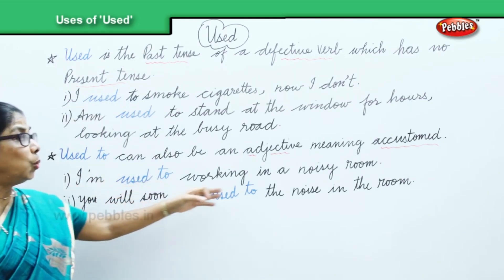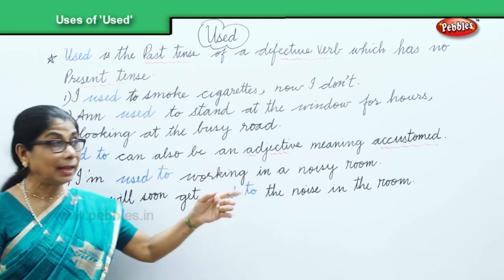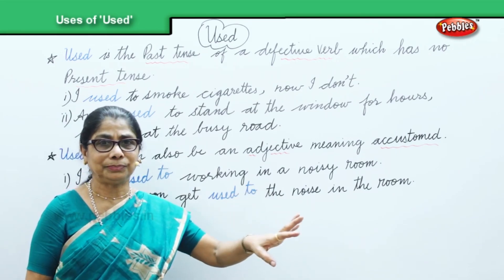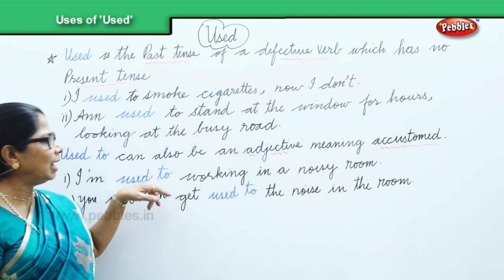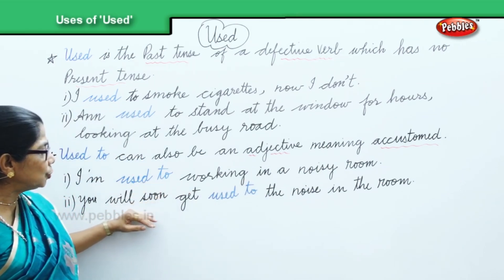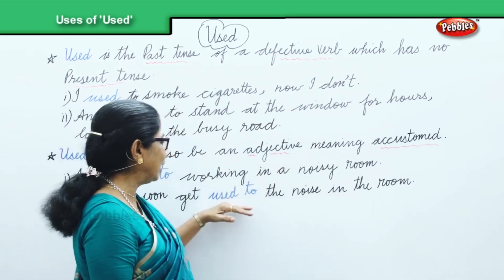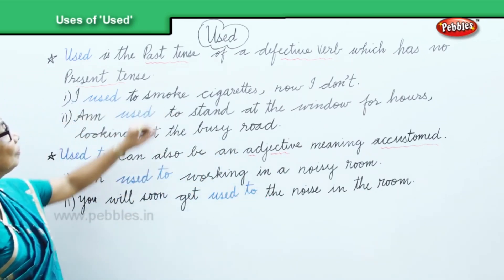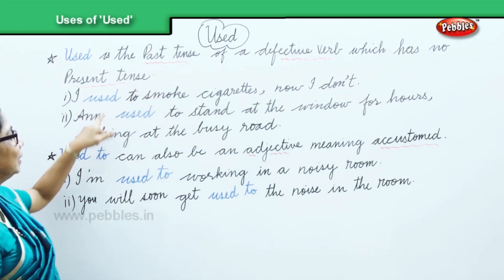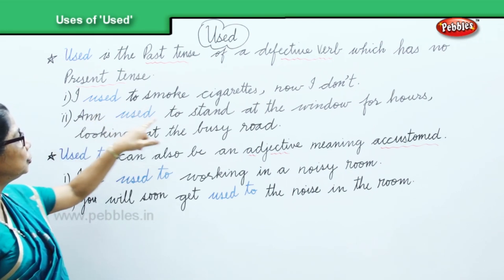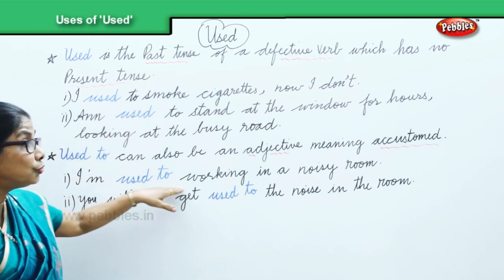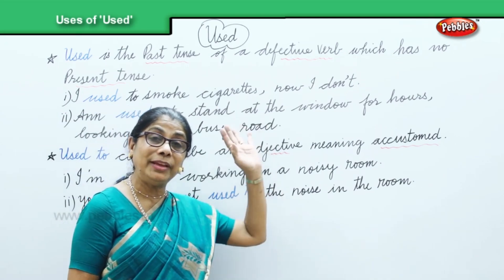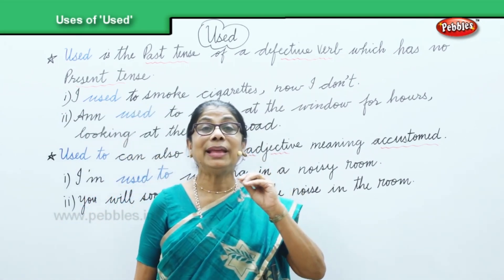'I am used to working in a noisy room.' And the second one: 'You will soon get used to the noise in the room' — meaning you will soon get accustomed to the noise in the room. We have done four sentences showing the two different ways of using 'used to' in a sentence.